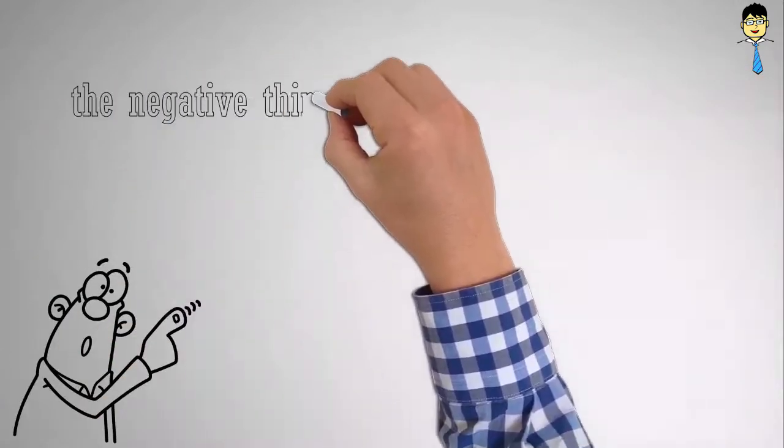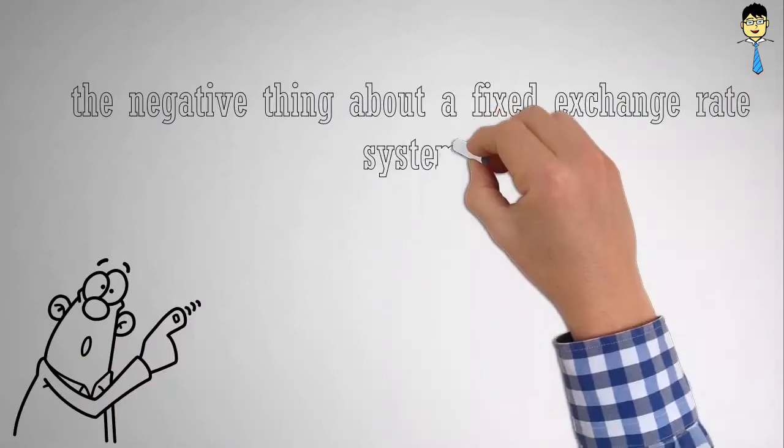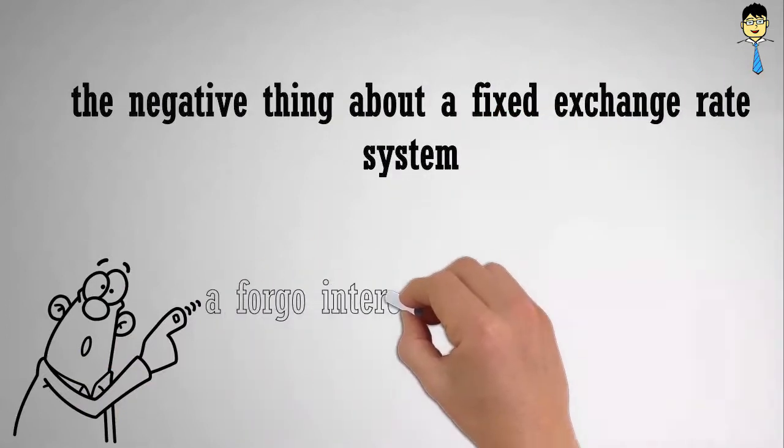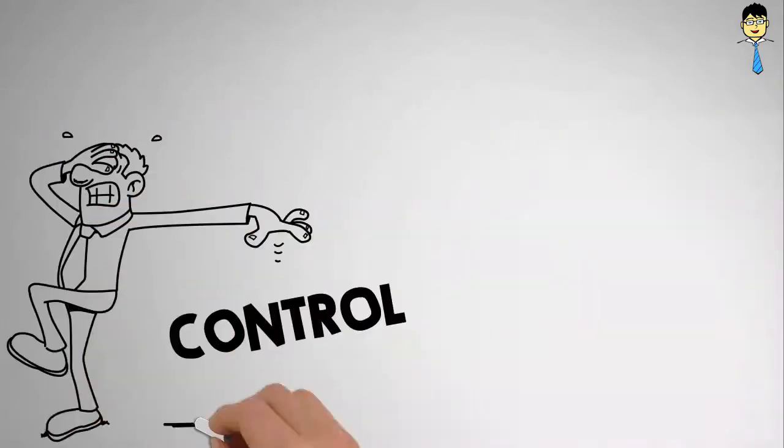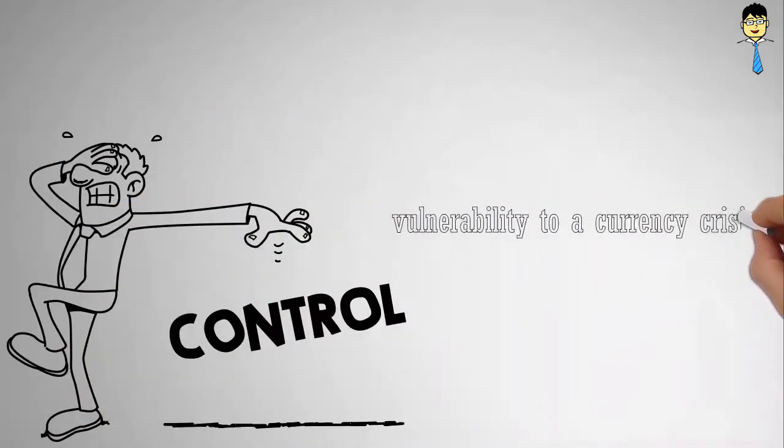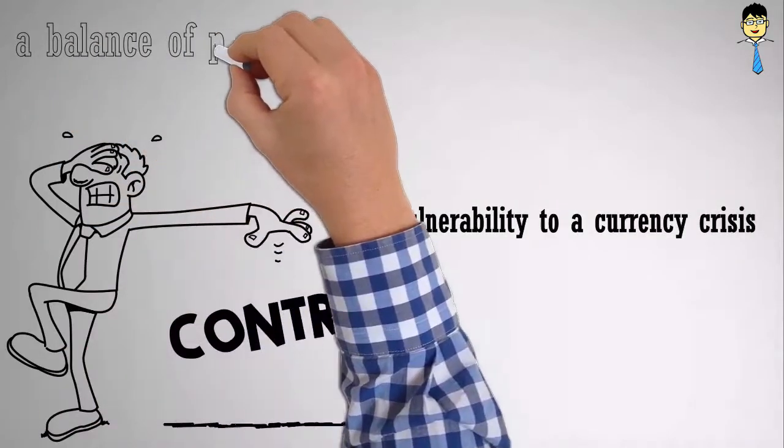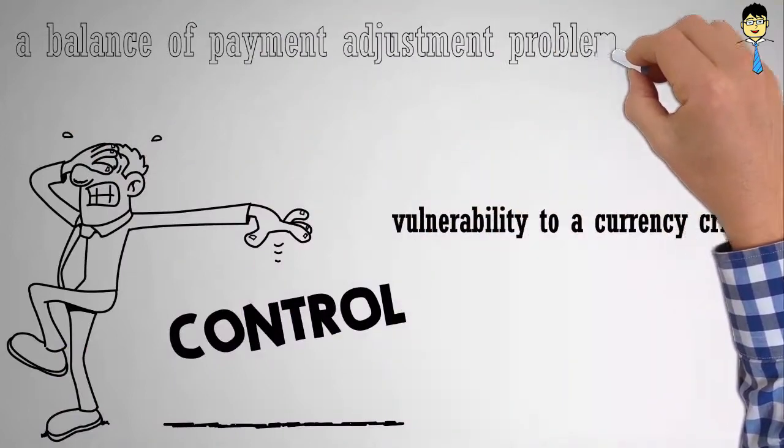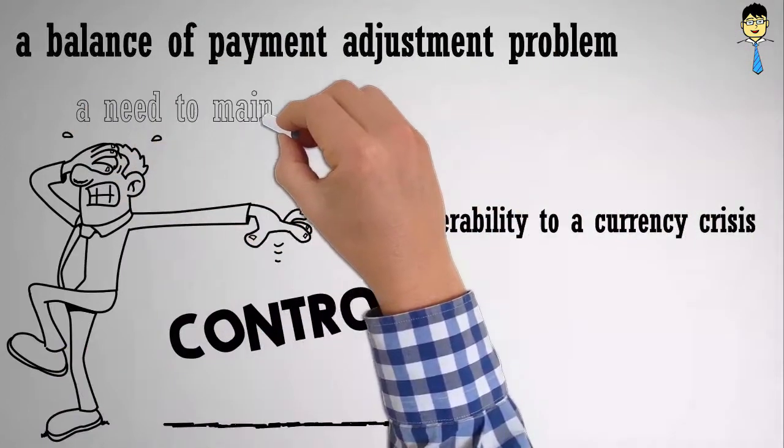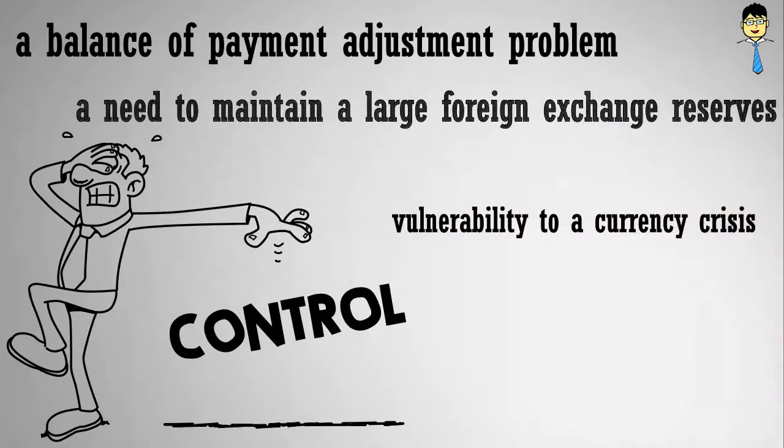However, the negative thing about a fixed exchange rate system would be that this would result in a foregone interest rate as a policy tool. There would also be vulnerability to a currency crisis. In addition, there would be a balance of payment adjustment problem. Lastly, there would be a need to maintain large foreign exchange reserves.